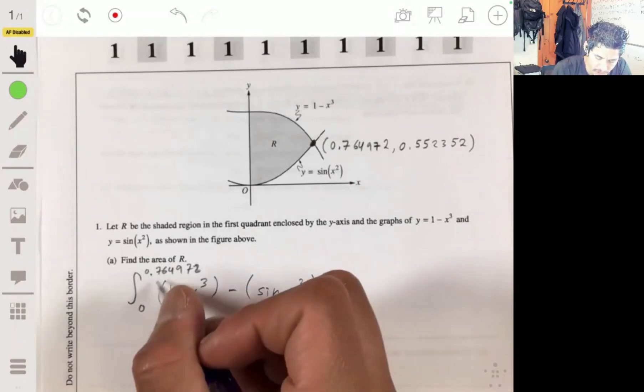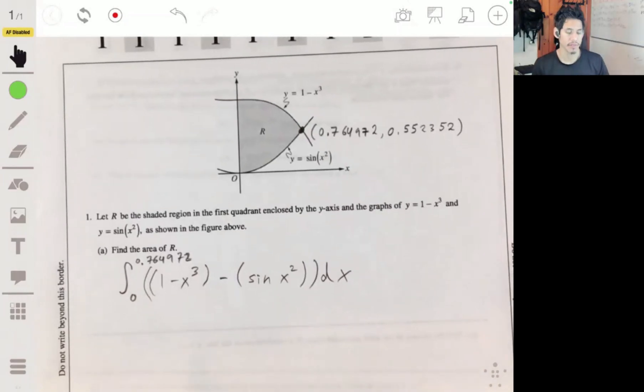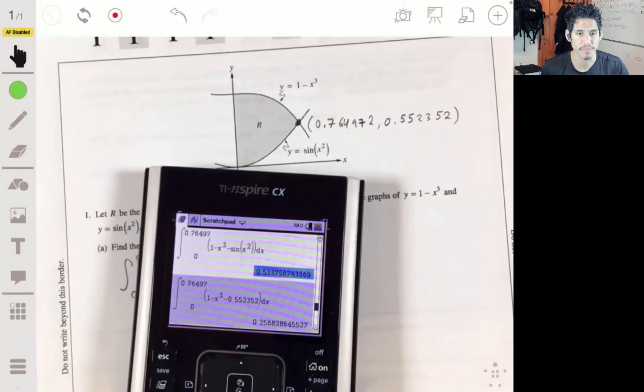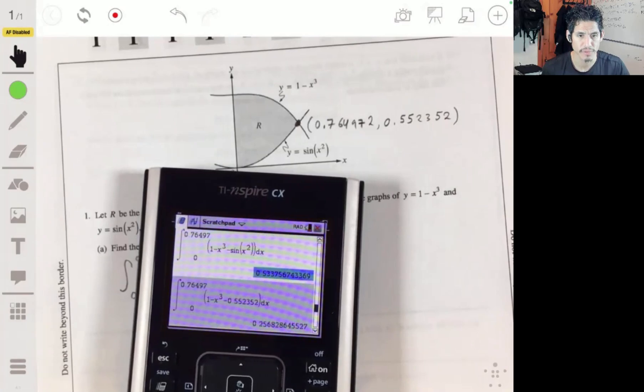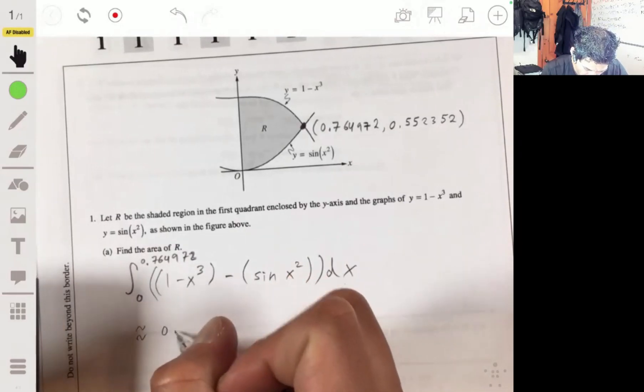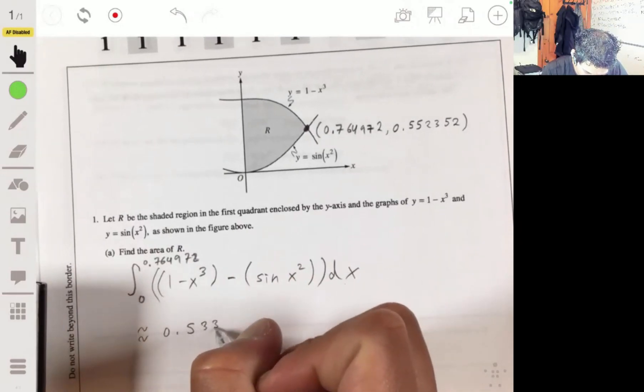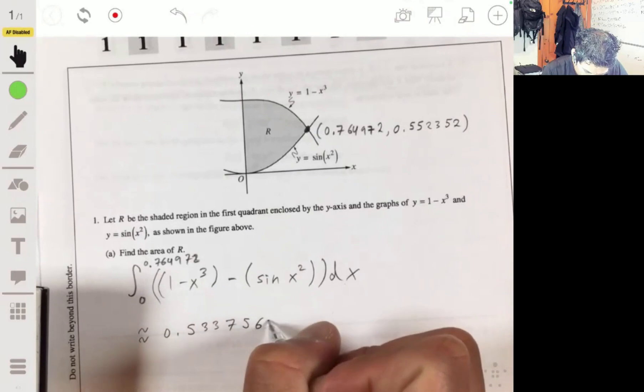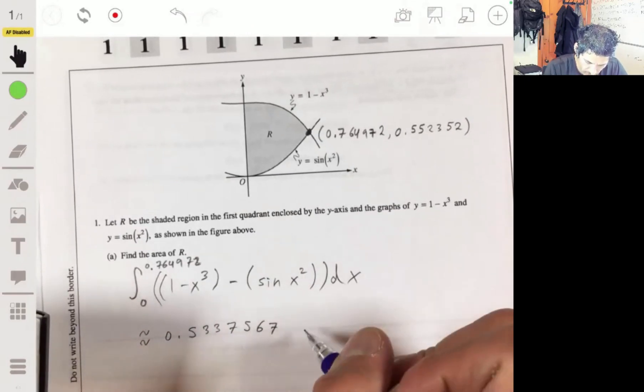All that times dx, using our calculator to figure this out, when it gets right about 0.533, 0.53375-ish.